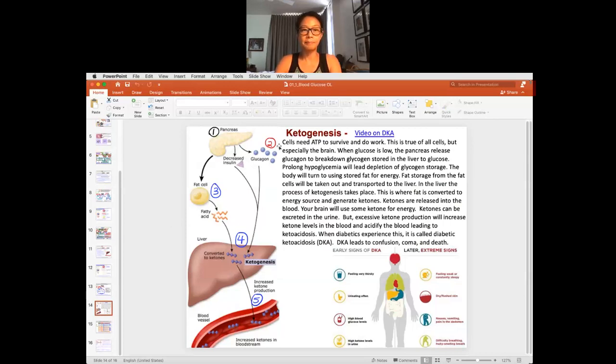So the body needs ATP to survive. You have the glucagon and you're releasing glycogen, but eventually the glycogen is depleted from the liver. So you're depending on the fat cells and the fatty acids from those fat droplets to be the energy source. Those fatty acids are converted to ketones in the liver, and that is called ketogenesis. The conversion of fat into ketones and energy.